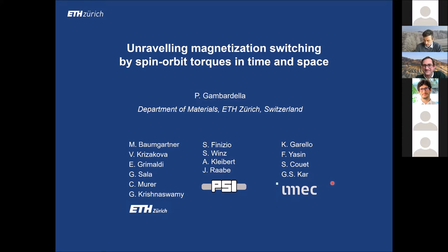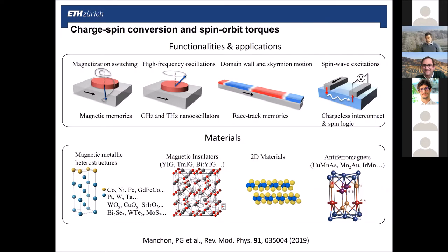You've heard from Aurelian how spin-orbit coupling can be harnessed to produce spin and orbital currents, and then these angular momentum currents can be used to manipulate the magnetization. What is really interesting about these so-called spin-orbit torques is that you can use them to control different effects — for example, magnetization switching, high frequency oscillations, domain wall motion, excitation of spin waves — and also to manipulate the magnetization of different classes of materials: not only metal structures, but also magnetic insulators, 2D materials, ferrimagnets and antiferromagnets. So they really provide a very rich playground for fundamental investigations as well as for applications.